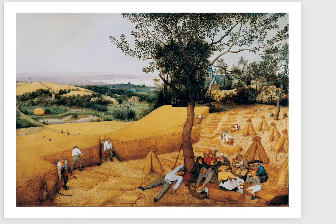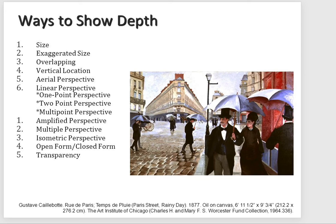So we have flat space, shallow space, and deep space. In conclusion, there are a good handful of ways to actually show depth that we've talked about today: playing with size, overlapping forms, creating a vertical location where the viewing point is set very high, playing with aerial perspective by making background things hazy and out of contrast or bluer, and using linear perspective — one-point, two-point, or multiple-point. The new terms from today include amplified perspective, multiple perspective, isometric perspective, open form versus closed form, and transparency.